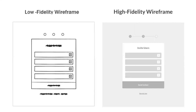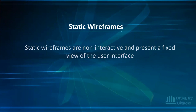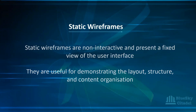The next type is static wireframes. Static wireframes are non-interactive and give you a fixed view of the user interface. They're useful for demonstrating the layout, structure, and content organization — like the checkboxes and sections we just saw. This type of wireframe is often used in early stages of design and for documentation. When putting together your PBIs or user stories, you'll include wireframes in there.